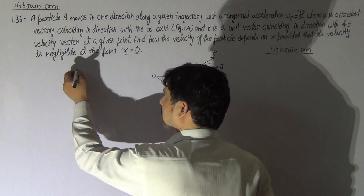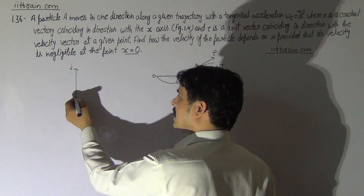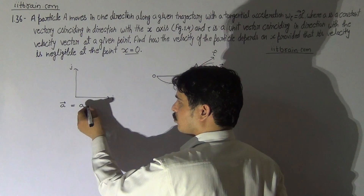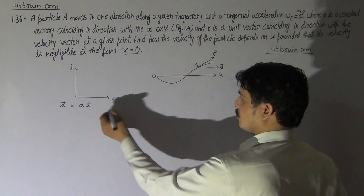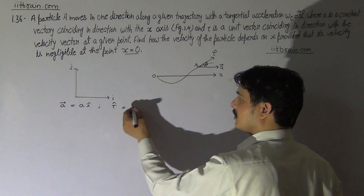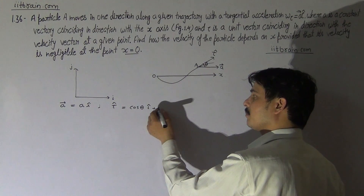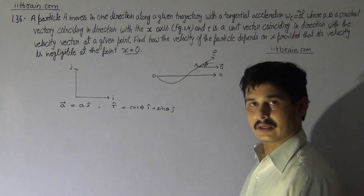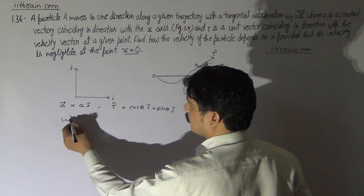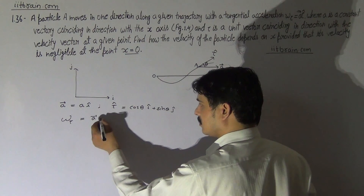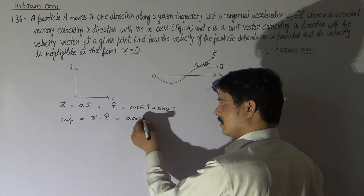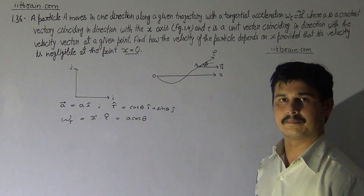To make the problem simple, we consider ĵ as the direction of the y-axis and î as the direction of the x-axis. Then vector A can be written as A·î according to the diagram. If the angle with the x-axis is θ, then τ unit vector can be written as cosθ î + sinθ ĵ. So the tangential acceleration A·τ gives us A cosθ, since î·î = 1 and î·ĵ = 0. Therefore, the tangential acceleration a_τ = A cosθ.